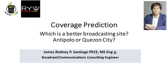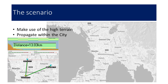Hello, good day to you. We're here for another episode of the James Rodney Santiago YouTube channel. We're here to talk about coverage prediction and to settle the long-standing issue: which one is the better transmission location? Is it Antipolo or Quezon City? This has been a subject of long discussion among engineers — whether it's preferable to transmit within the city or take advantage of the height of a mountain.